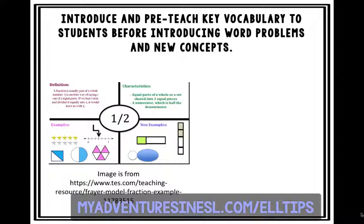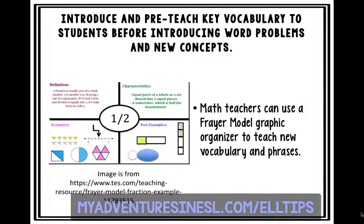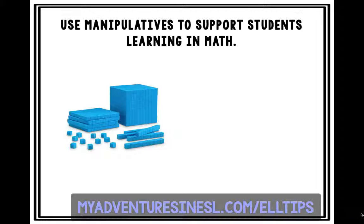The next tip is to introduce and pre-teach key vocabulary to students before introducing word problems and new concepts. This is not just for beginners — it can be for your intermediate and long-term ELLs as well. One popular tool we use is the Frayer Model, where you have characteristics, non-examples, examples, and a definition. For newcomers, make the definition very student-friendly. Have students practice by pairing them up and using the words in sentences, and reward students who consistently use the vocabulary throughout the lesson.